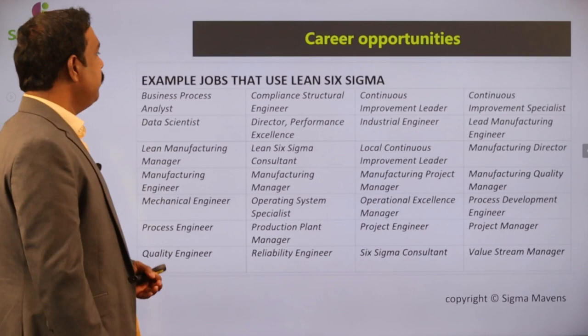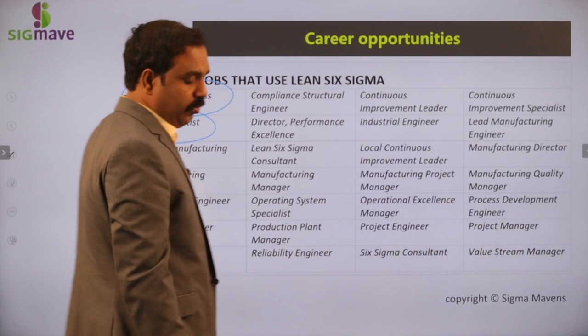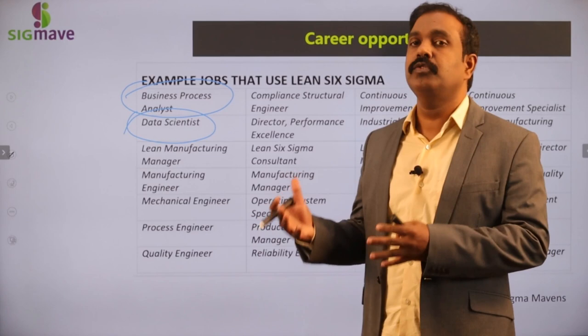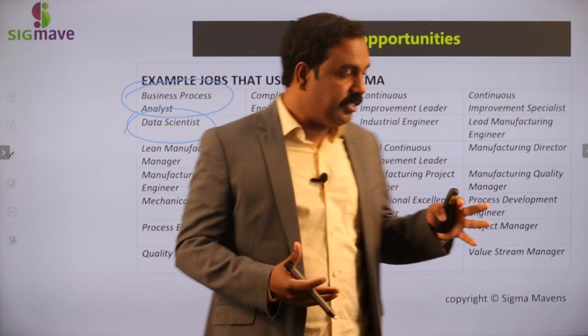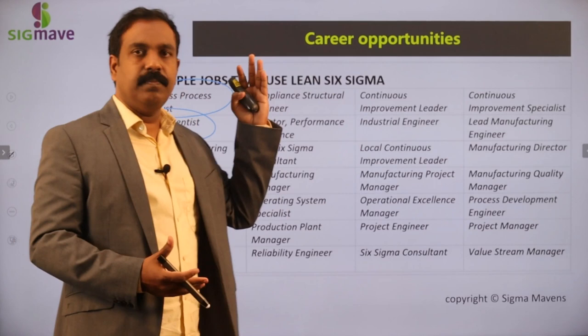There are a lot of areas a Six Sigma professional can move into — one is business process analyst and data scientist. When you do Six Sigma black belt, almost 60-70% of data science is already covered. You know how to find the relationship between inputs and outputs. So a Six Sigma person is not less than a data scientist. There are also numerous opportunities as a process engineer, quality engineer, and many other roles for Six Sigma professionals.